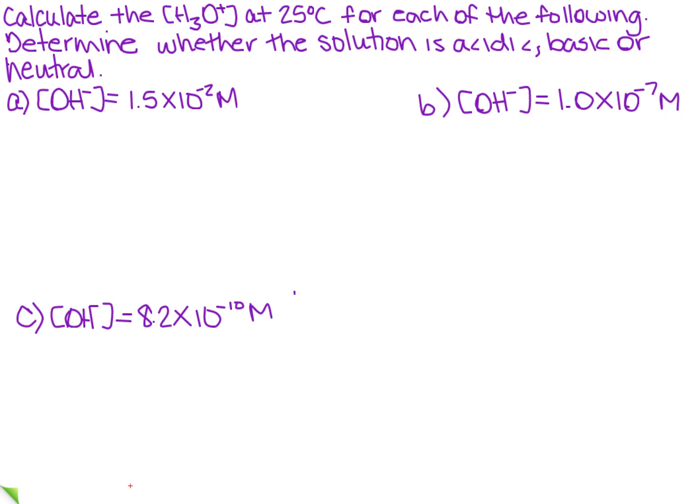We want to calculate the hydronium ion concentration at 25 degrees C for each of the following. And then once we've done that, we're going to determine whether the solution is acidic, basic, or neutral. So how do we want to do that?